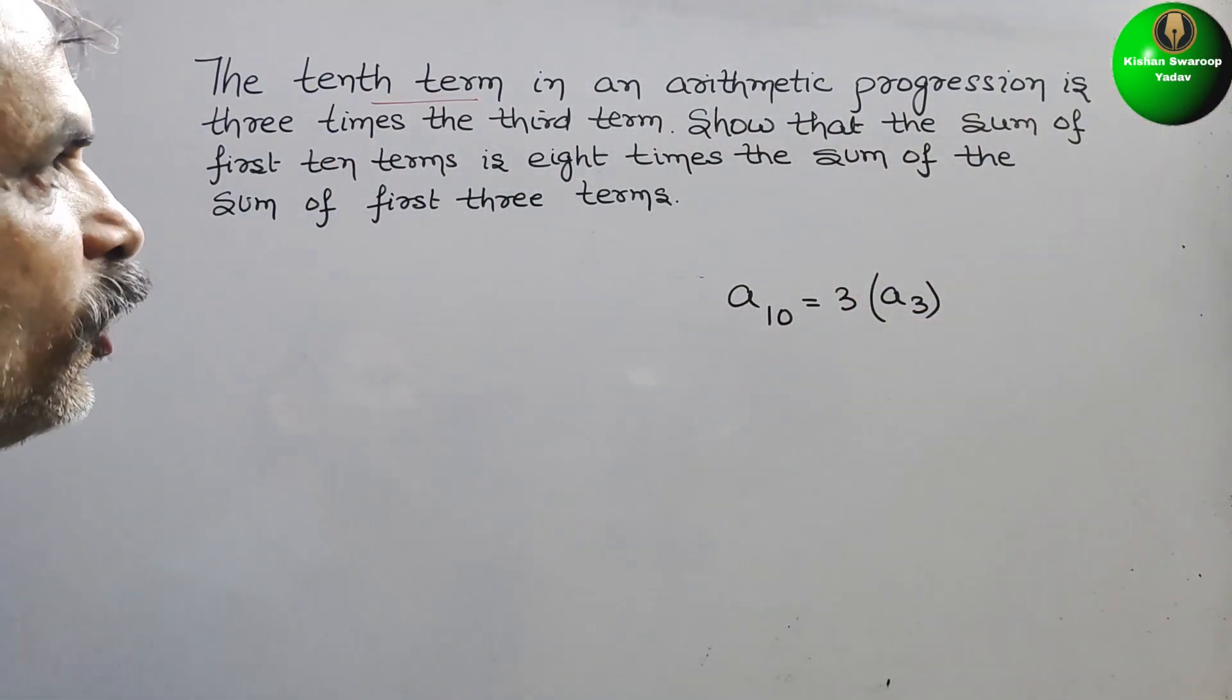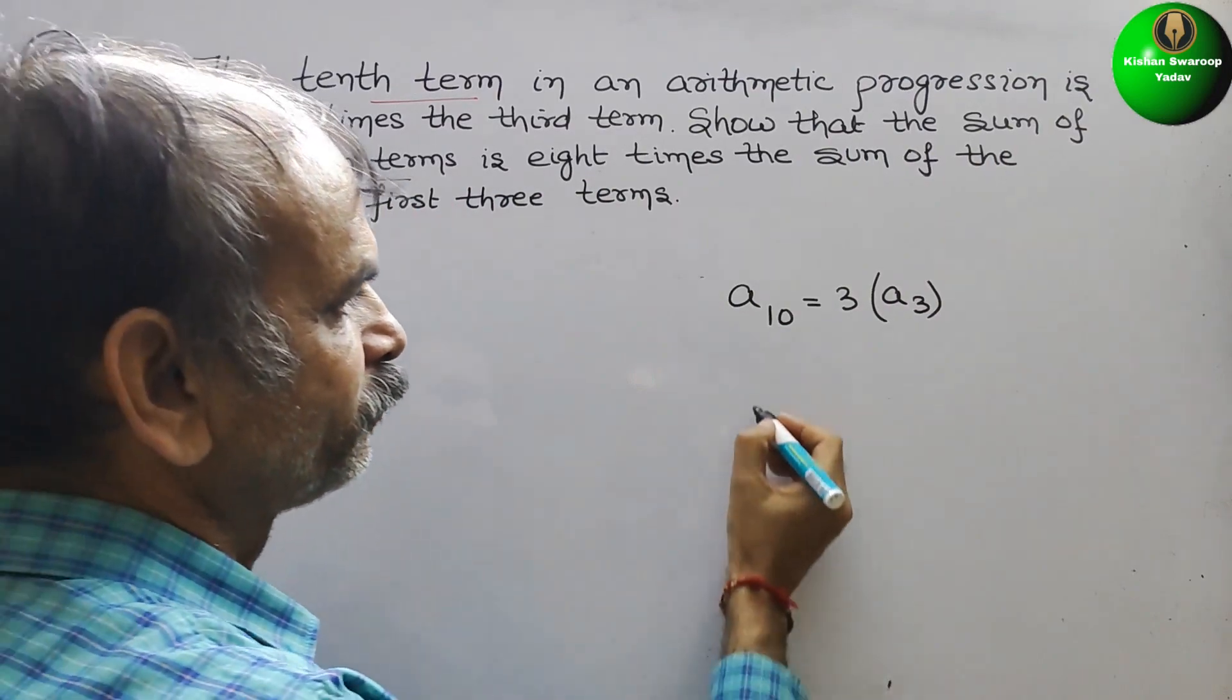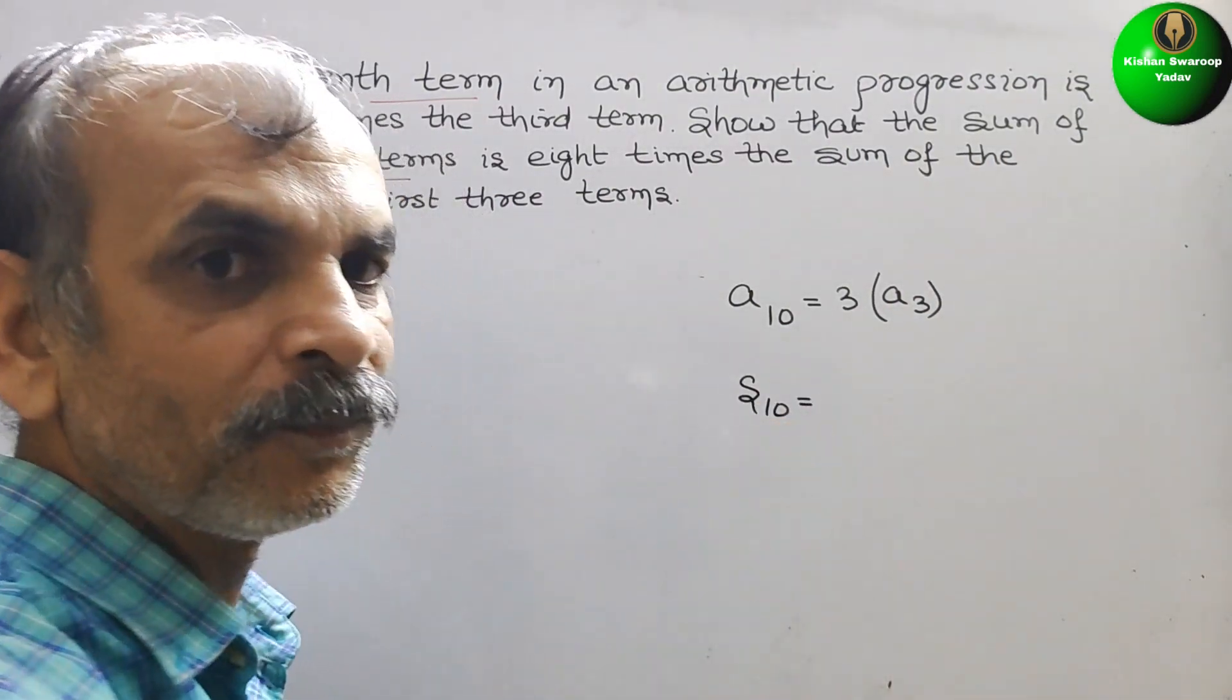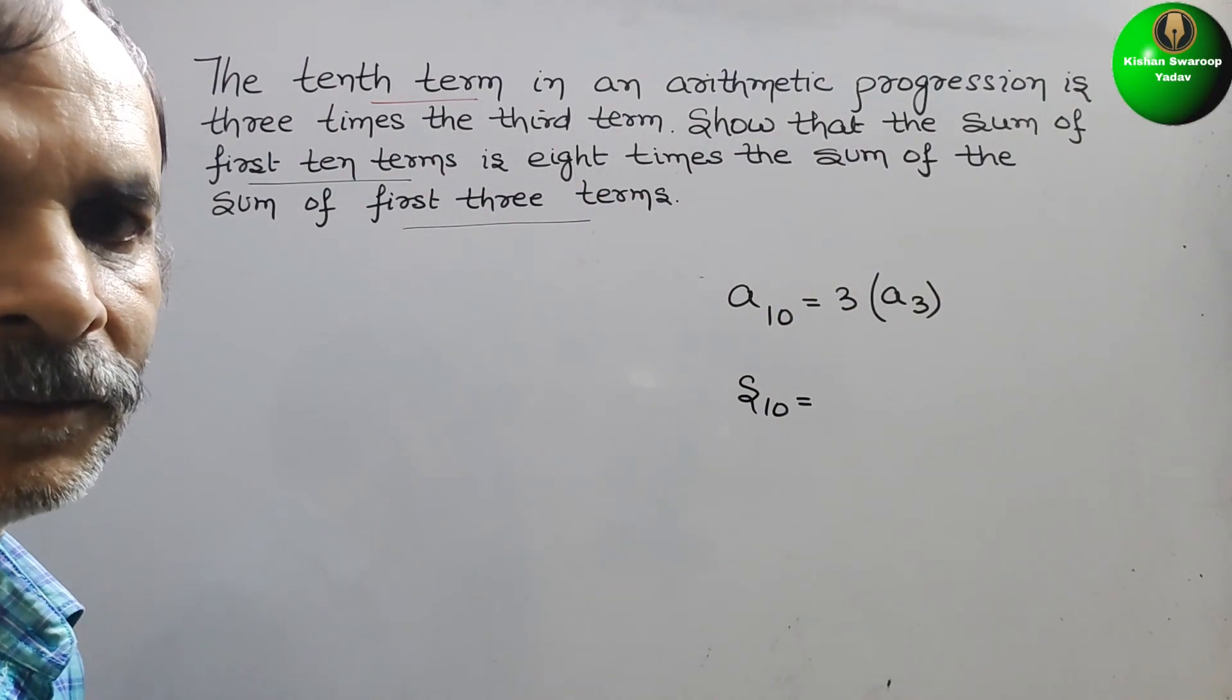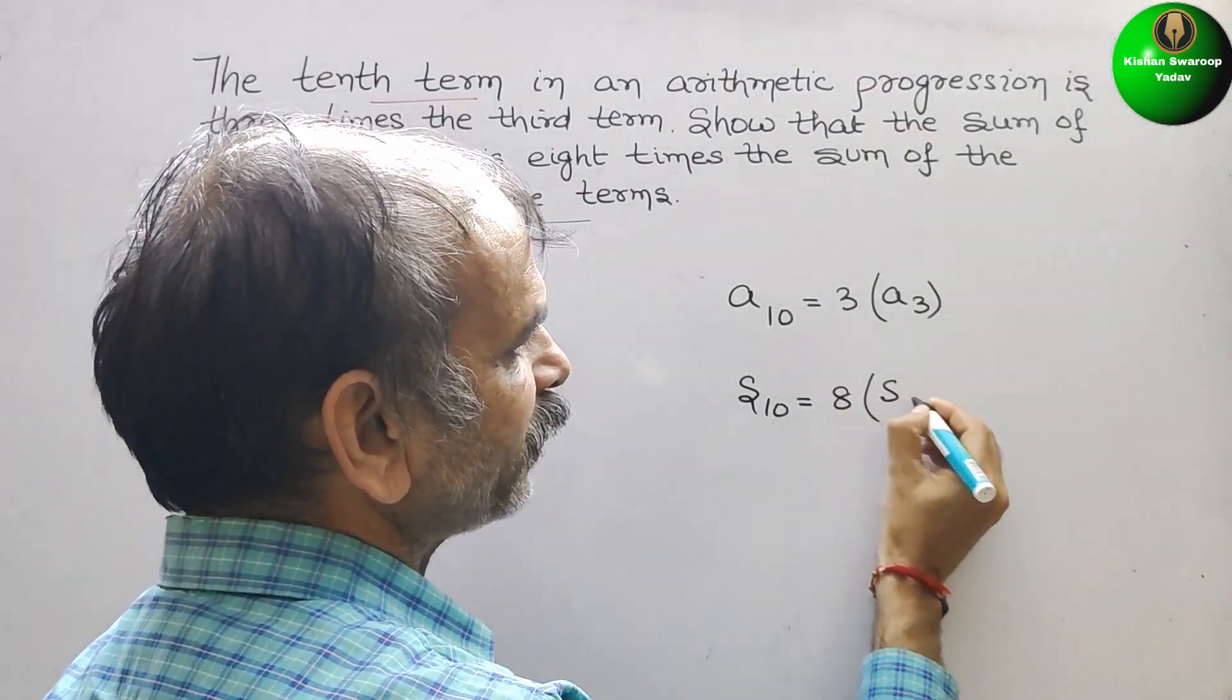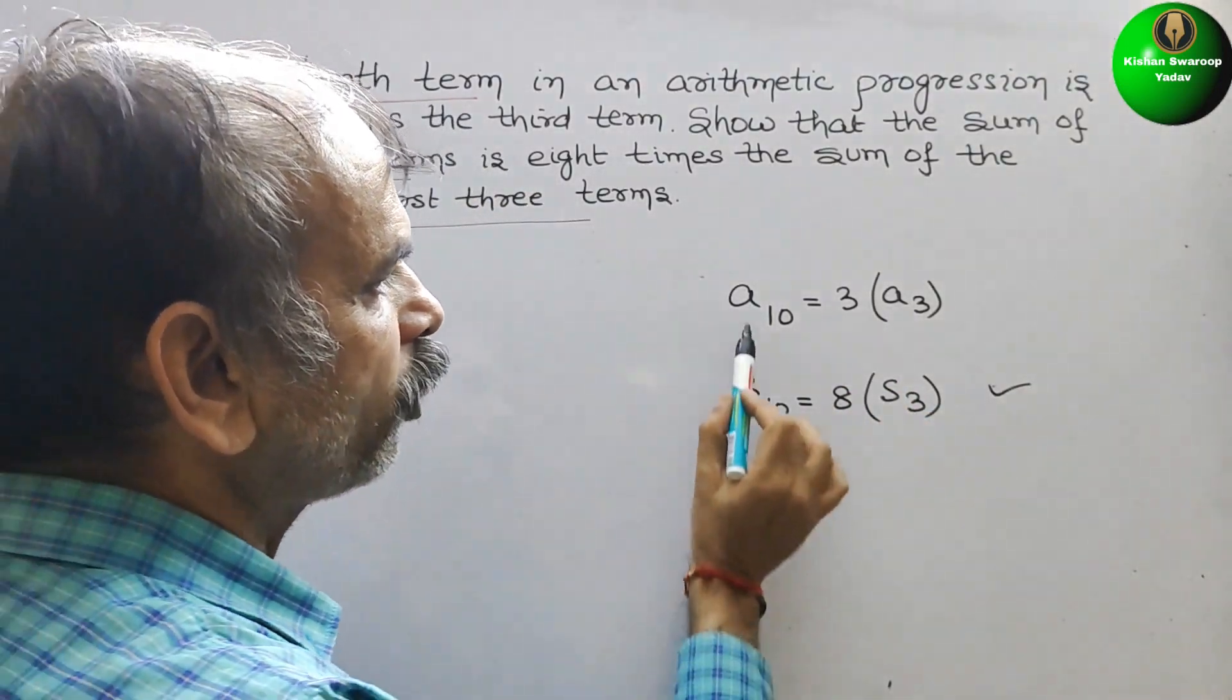Next, what they have told? We have to show that the sum of first 10 terms, that means S10, is equal to 8 times the sum of first 3 terms. So 8 times S3. This we have to show. So first we will solve this.